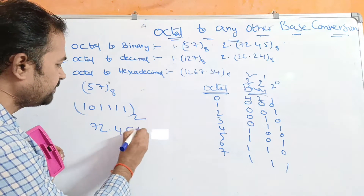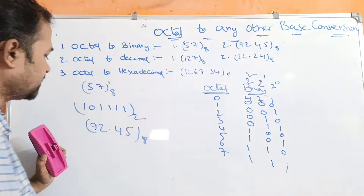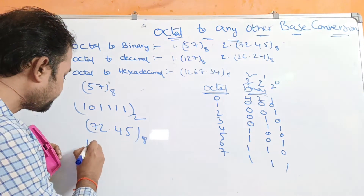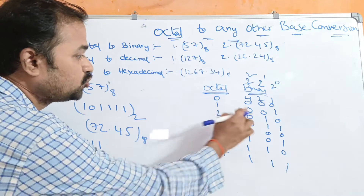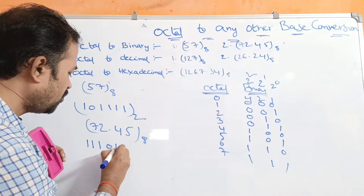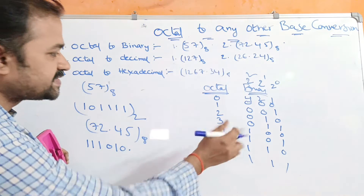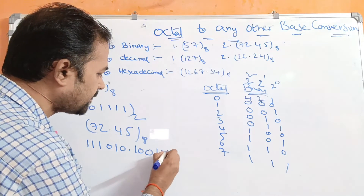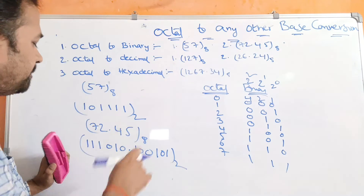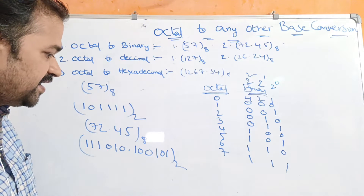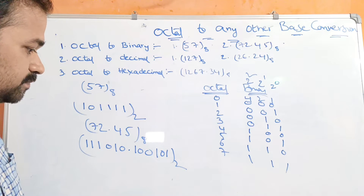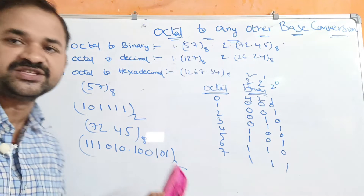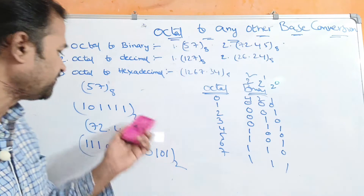Now let us solve the second example: 72.45 base 8. 7 means 111, 2 means 010, 4 means 100, and 5 in binary notation is 101. So the binary number is 111 010 dot 100 101 base 2. This is the binary number for this octal number.